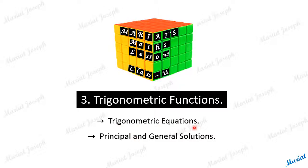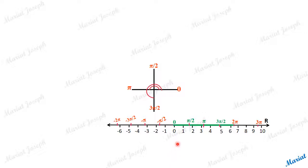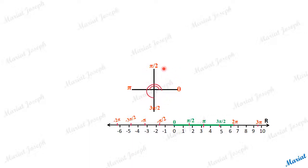Trigonometric equations and their principal and general solutions. Let's first revise this special number line — the number line on which 0, 1, 2, 3 till infinity and minus 1, minus 2 till minus infinity are marked, but made special by plotting some new numbers: the measures of angles in radian measure, angles in standard position measured in radian measure.